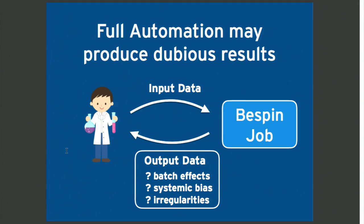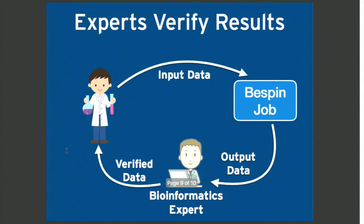Initially, we thought we could completely automate the process — a researcher inputs the data on the website, the workflow runs successfully, and the researcher gets the output data. However, there may be statistical anomalies present in the results of the Bespin job, and our researcher might not have the expertise to recognize them. This might not be good science. So we added a data verification step where the results of the Bespin job are sent to a bioinformatics expert for review before final delivery to the researcher.